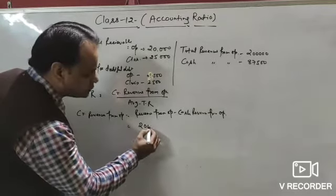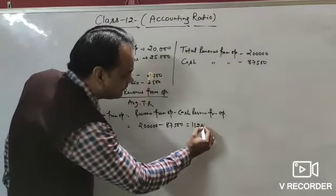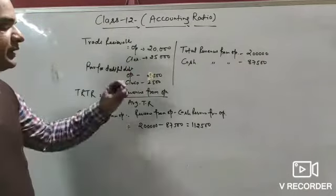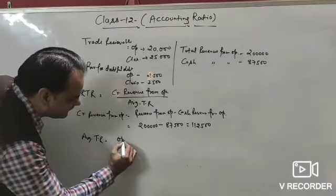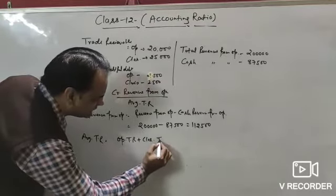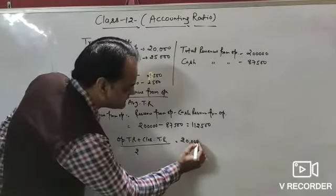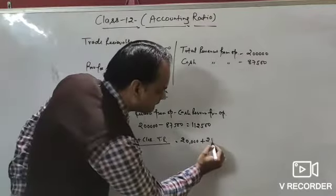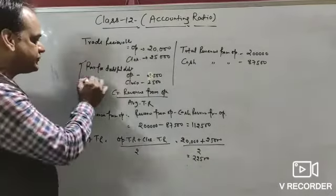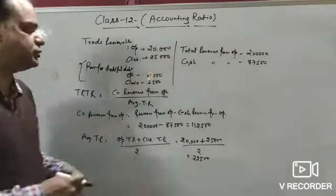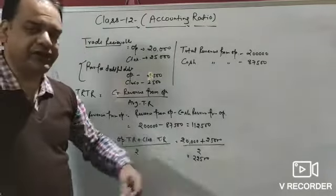Credit revenue from operation = total revenue from operation minus cash revenue from operation = ₹2,00,000 minus ₹87,500 = ₹1,12,500. Average trade receivable = opening trade receivable plus closing trade receivable divided by 2 = ₹20,000 plus ₹25,000 divided by 2 = ₹22,500. Note: provisions for doubtful debt are already deducted in trade receivable figures, so no separate adjustment is needed.